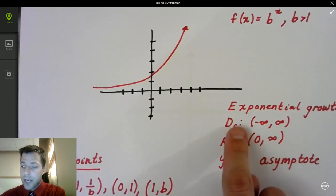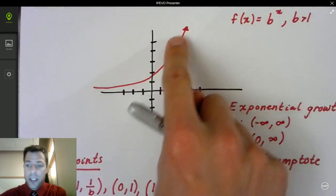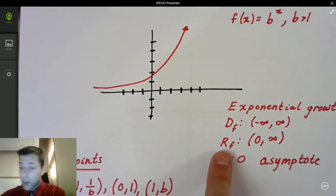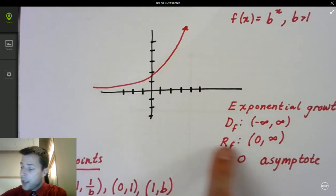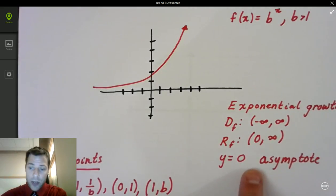The domain is all real numbers. There's nothing that will make this function not work, so it is continuous and also one-to-one. The range, however, you notice this function gets really close to the x-axis and stays above. The range is positive real numbers, and there's actually an asymptote at y equals 0.